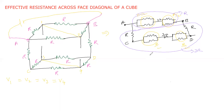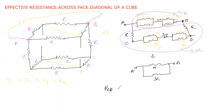We now have two paths in parallel between a and b: one of resistance r and the other of resistance 3r. Using the parallel formula, r_effective = (3r × r) / (3r + r) = 3r/4. Therefore, the effective resistance across any face diagonal of a cube containing 12 equal resistors is 3r/4.